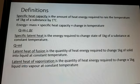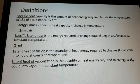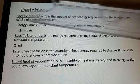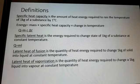Now the important definitions you should know by heart. First is specific heat capacity: the amount of heat energy required to raise the temperature of 1 kilogram of a substance by 1 degree Celsius. The equation is Q = mcΔT — mass times specific heat capacity times change in temperature. Delta (Δ) is a Greek letter meaning change, so ΔT means change in temperature.